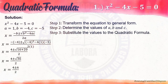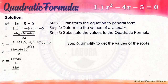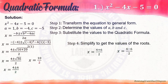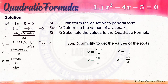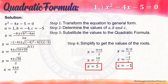Simplifying: the square root of 36 is 6, so we arrive at two answers. x equals 4 plus 6 over 2, and x equals 4 minus 6 over 2. 4 plus 6 is 10, and 4 minus 6 is negative 2. 10 divided by 2 is 5, and negative 2 divided by 2 is negative 1. So the values of x are 5 and negative 1.